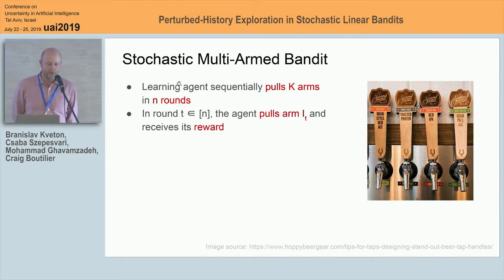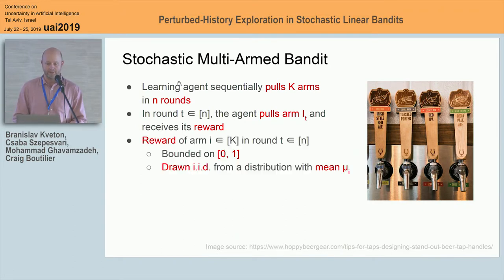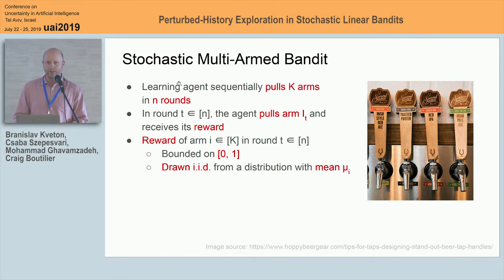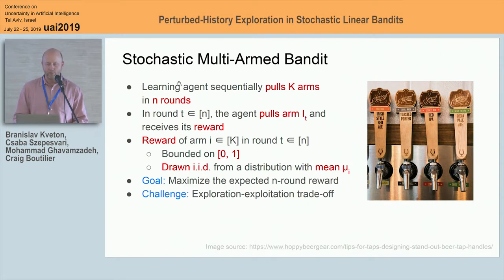Let me give you a quick introduction to multi-armed bandits. Multi-armed bandits are essentially a framework for sequential decision-making under uncertainty, where the learning agent pulls K arms in N rounds. In round T, the agent pulls one arm, denoted by I sub T, and then receives its reward. We'll be looking at stochastic multi-armed bandits, assuming that the reward of arm I in round T is drawn IID from some distribution with mean mu sub I.